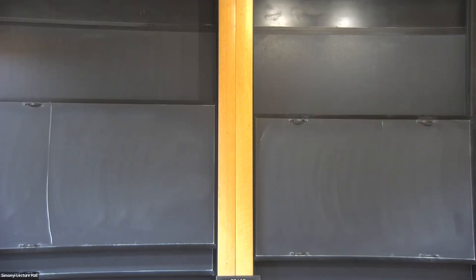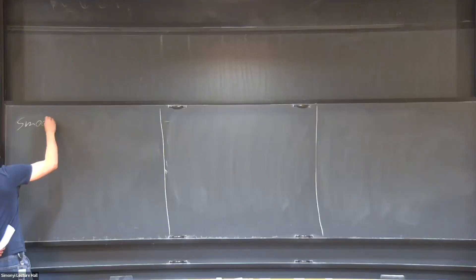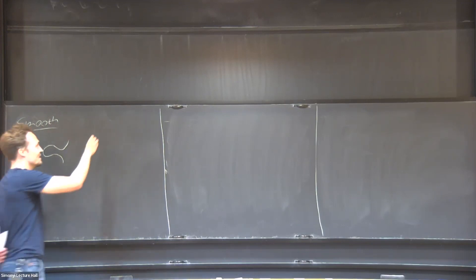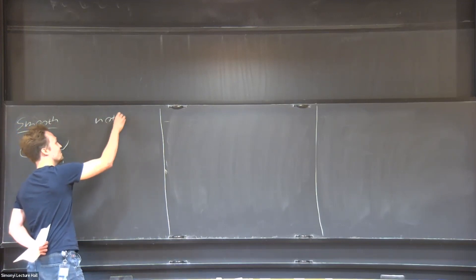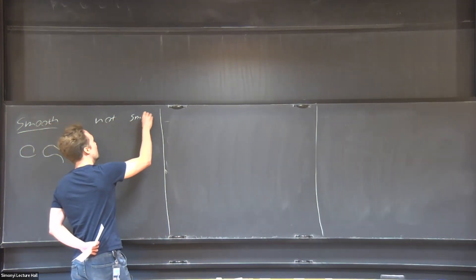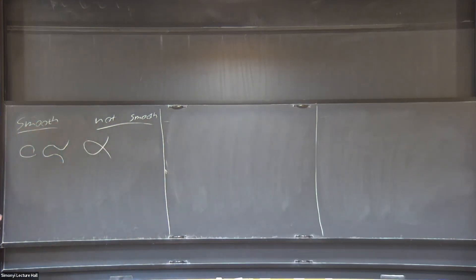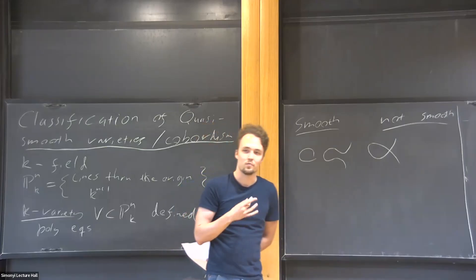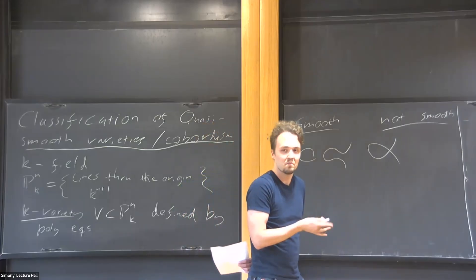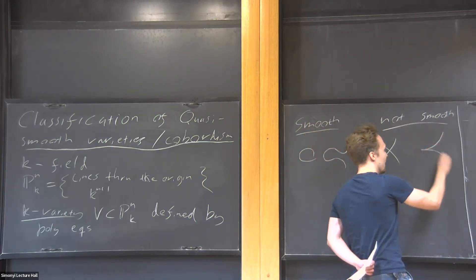Not all varieties are nice, so for us today the important niceness condition is smoothness. To give an example of a variety that would be smooth is something like an elliptic curve. What is not smooth? Something like a self-intersection—this is not a smooth point. Also, you could have something like a cusp. They're also not smooth, not very nice.